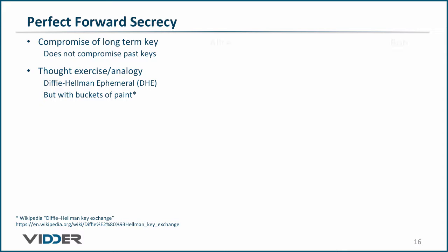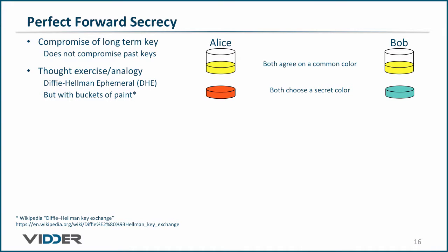Once again, Alice wants to send a message to Bob. So, they both start out with buckets of paint of the same color. Then, they each separately choose a secret color.